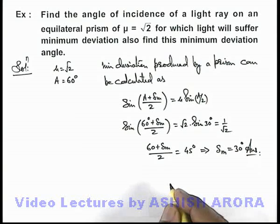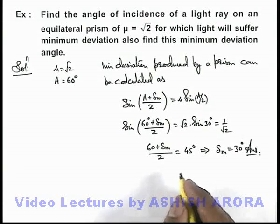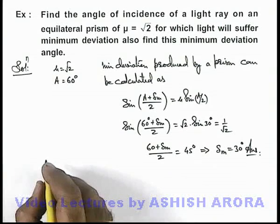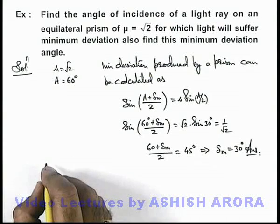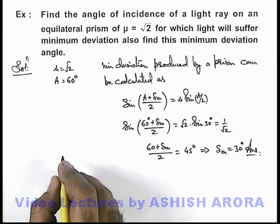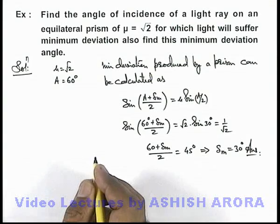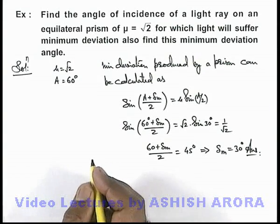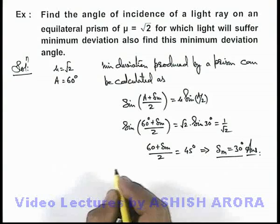That will be the answer to this problem for minimum deviation. And for this deviation, we know the value of i must be equal to e, that is, angle of incidence must be equal to angle of emergence as light passes symmetrically for minimum deviation.